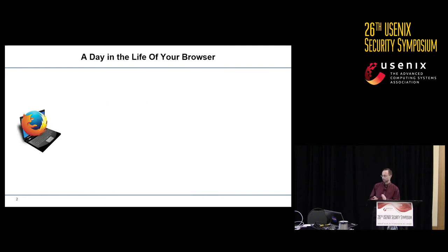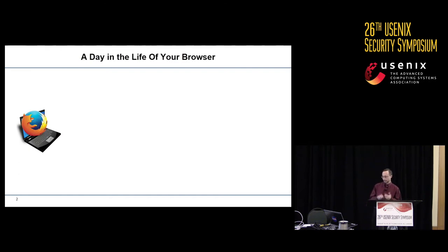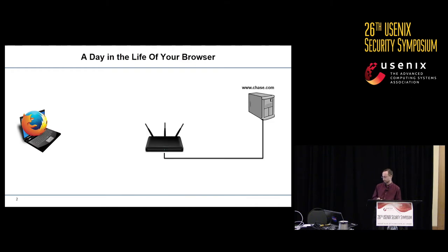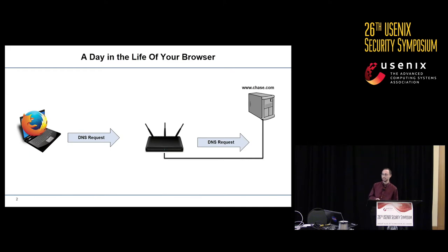We're going to start by talking about a day in the life of your web browser. You open up your web browser, connect to your wireless network, go to chase.com, for instance, to do your online banking. When you do that, your web browser issues a DNS request, which is forwarded on by your router into the Internet.